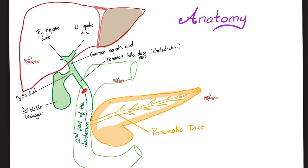The common bile duct joins the pancreatic duct from the pancreas, and they open together into the gastrointestinal tract — specifically the duodenum, to be precise the second part of the duodenum, and even more specifically the posteromedial aspect of the second part of the duodenum of the small intestine.